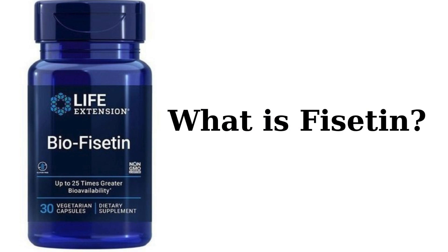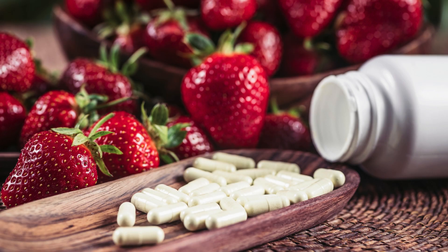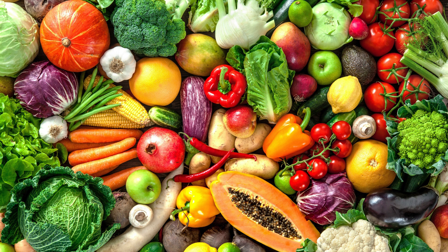What is Fisetin? Fisetin is a type of polyphenol belonging to the flavonoid group. It is a plant pigment found in a variety of plants, giving color to various fruits and vegetables such as strawberries, cucumbers, apples, paradise apples, onions, tomatoes, grapes, and kiwi.